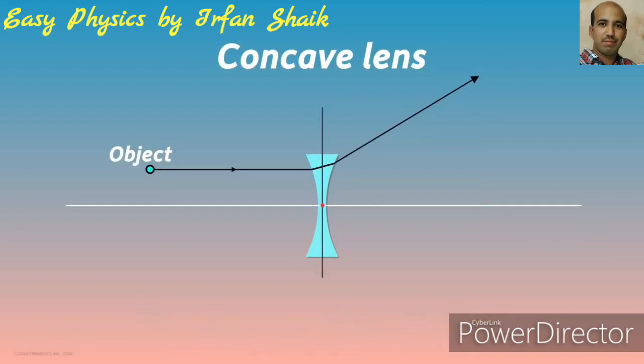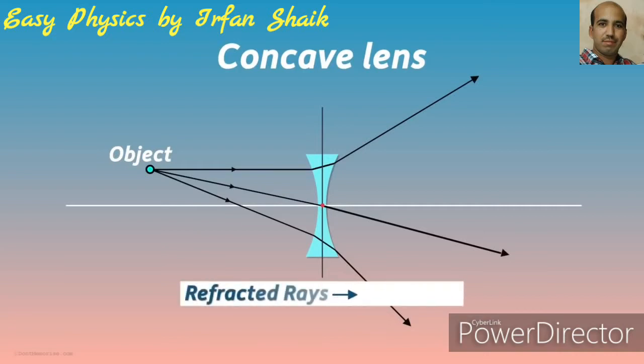Will the light rays converge after refraction? When rays are incident on a concave lens, after refraction they do not converge at a single point. These refracted rays will diverge.